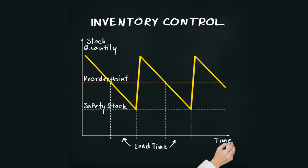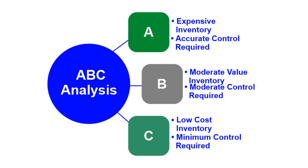One method to optimize inventory management is through ABC analysis, which categorizes items based on their value and importance. A items are high value, B items are medium value, and C items are low value. This helps prioritize resources and attention.